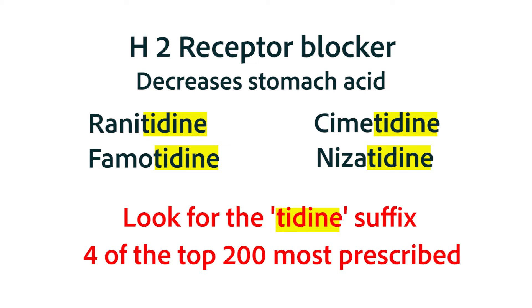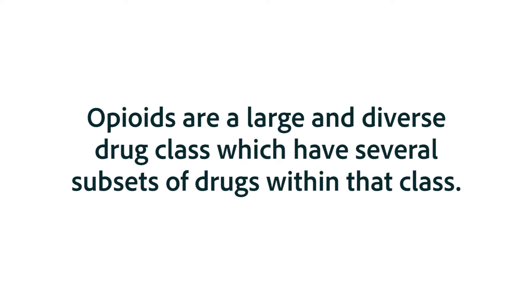You may be thinking, we talked about the opioids and a lot of them were quite different. To be clear, there are a few cases in which medications of the same drug class can be quite different. The opioids are one example because they're a very broad and diverse drug class, actually divided into smaller units. You won't find a common suffix for the entire group of opioids, but most drug classes with a common suffix have a lot in common with other members of that class.